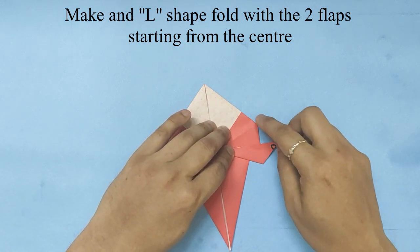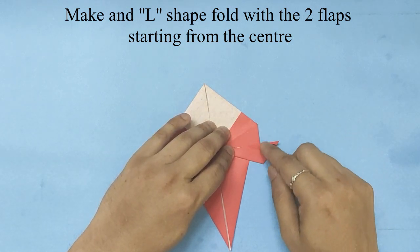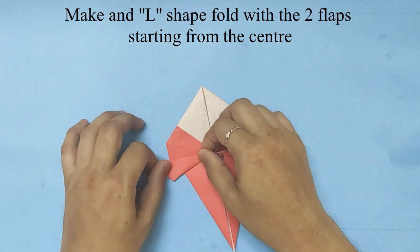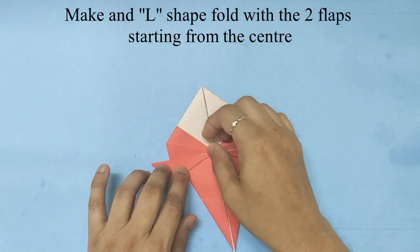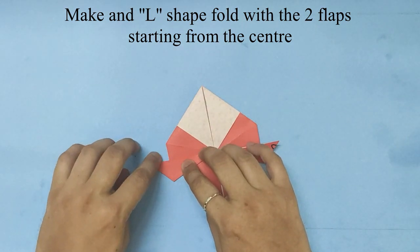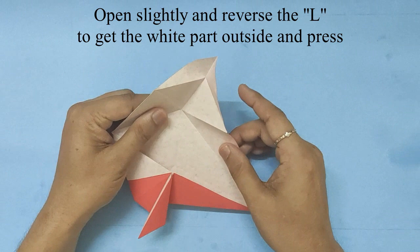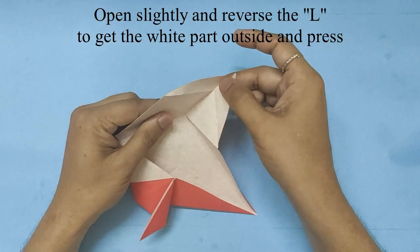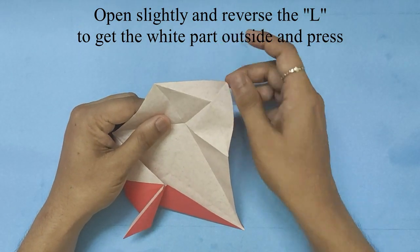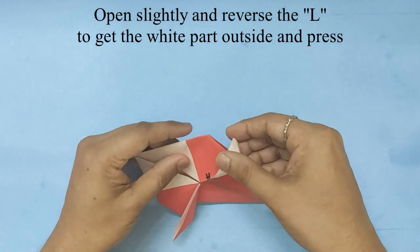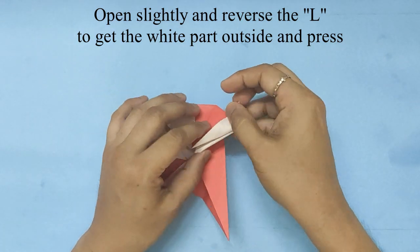We will do the same on the other side. That is your L. We will open it and we will do a reverse fold, and we will fold it back so that we have the L as a white part. Do the same on the other side.